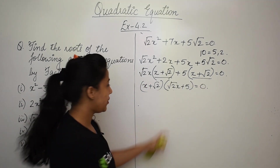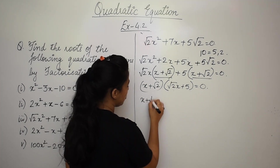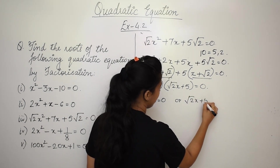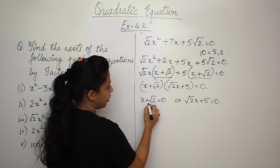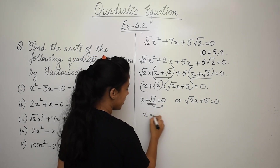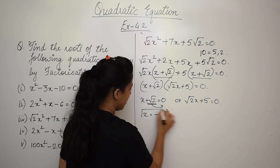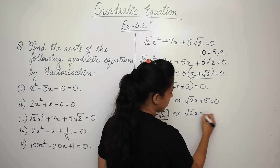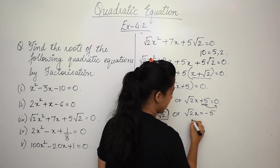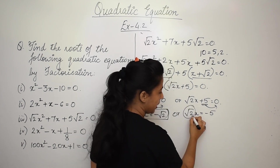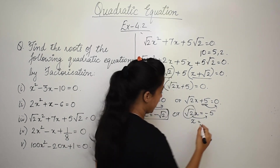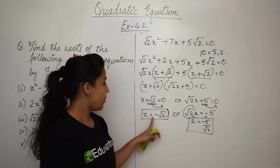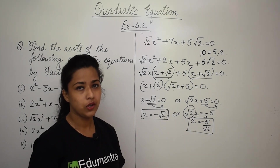Setting each factor to zero: x + √2 = 0 gives x = -√2. And √2·x + 5 = 0 gives √2·x = -5, so x = -5/√2. Therefore the two values of x are -√2 or -5/√2.